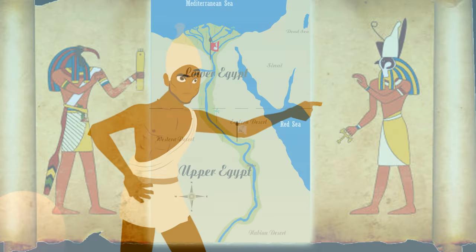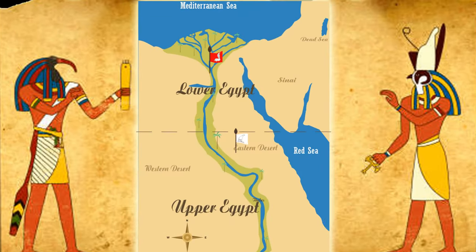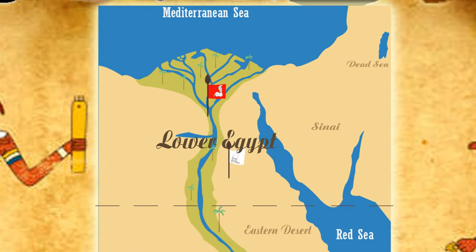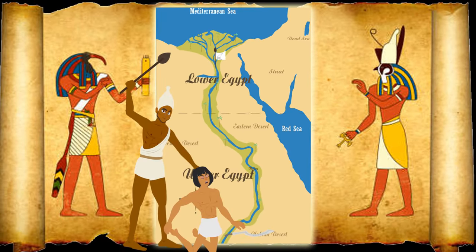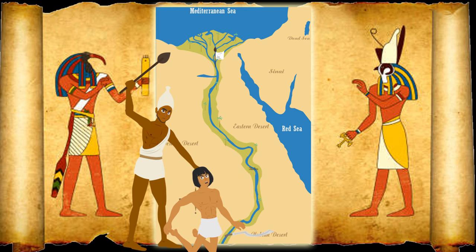The final battle took place right at the triangle of the Nile Delta, where two armies fought for three days and three nights. In the end, the Upper Egyptian army won, and King Menes finally united Egypt, becoming the first Pharaoh of ancient Egypt.